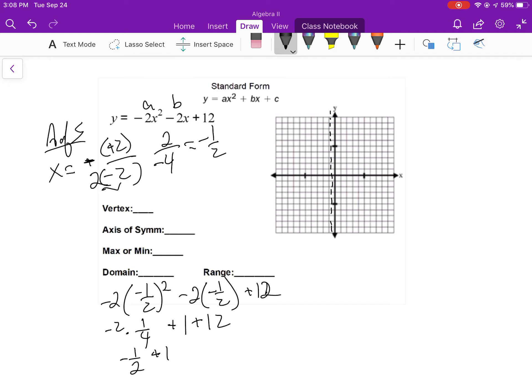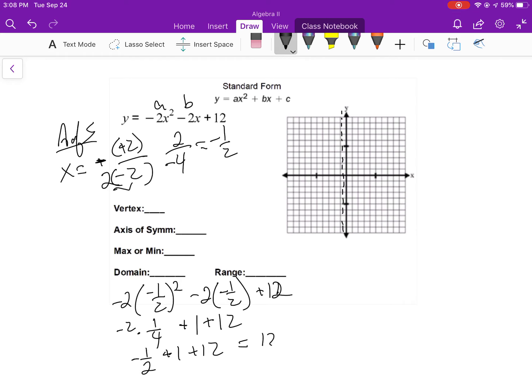So plus 1 plus 12, that's going to give me 12.5. So x is equal to negative 1 half. And this is going to be negative 1 half comma 12.5. Which is good because I knew this was going to open down. My vertex had to be somewhere up there.